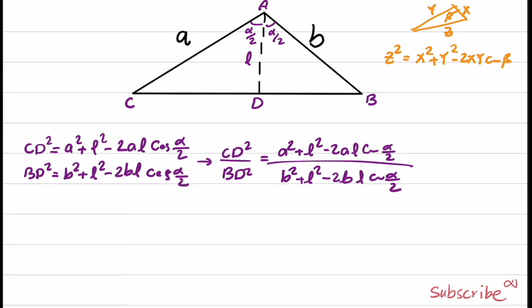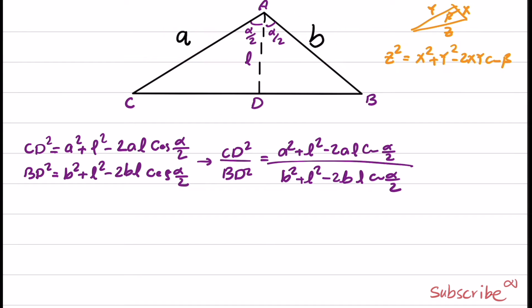In the next step, I'm going to use the angle bisector theorem. That theorem says that if we have a triangle with an angle bisector, the ratio between the two segments is equal to the ratio of the two sides. In other words, CD over BD equals A over B. If we apply squaring to both sides, we get CD squared over BD squared equals A squared over B squared, and I can use this here.